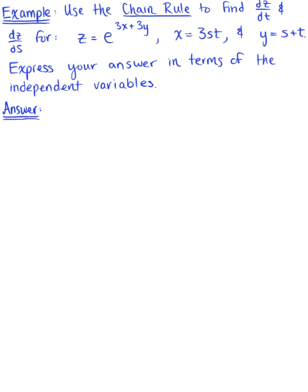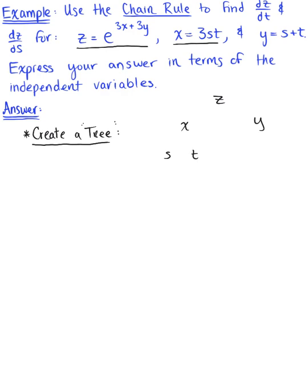To get started, we need to perform two chain rules. Let's quickly create a tree to see their formulas — this is optional, of course, if you can see those derivatives and go right for it. Looking at this function, we have z as a function of x and y, x is a function of s and t, and y is a function of s and t.